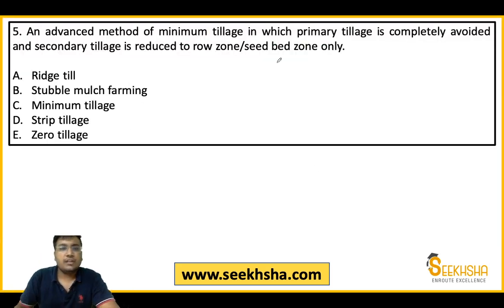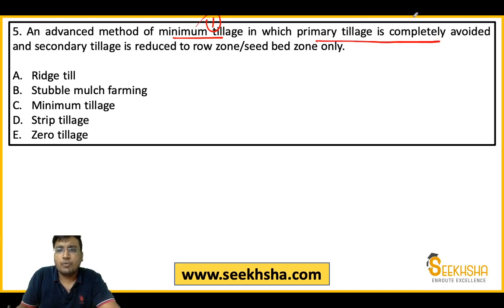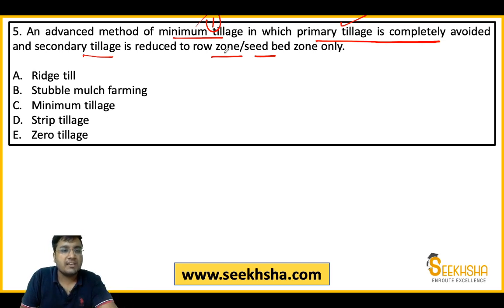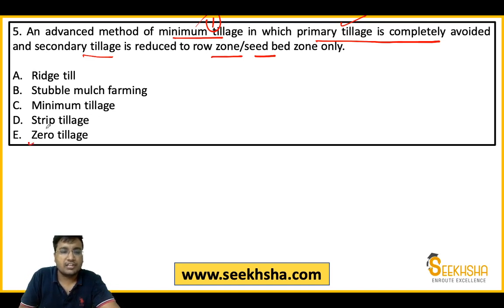The fifth and last question: what is the advanced method of minimum tillage? Minimum tillage is a method in which primary tillage is completely avoided, and secondary tillage can be reduced — only applied in the row zone where seeds are to be placed. Options are ridge till, stubble mulch farming, minimum tillage, strip tillage, and zero tillage. The right answer is zero tillage.